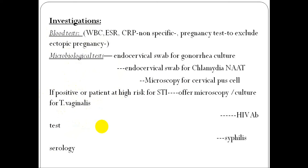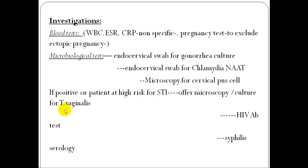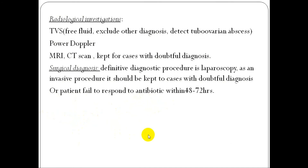Investigations include blood tests: complete blood count, ESR, C-reactive protein, and pregnancy test to exclude ectopic pregnancy. Microbiological tests: endocervical swab for gonorrhea and chlamydia, microscopy for cervical pus cells, and if positive, high risk of sexually transmitted infection. Offer testing for Trichomonas vaginalis, which may also be excluded by serology or high vaginal swab.